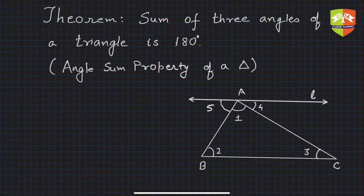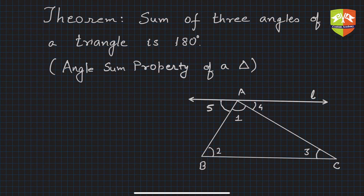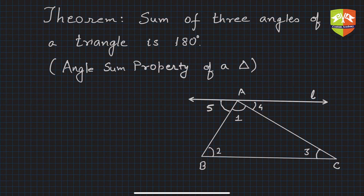In the previous part of the video we saw the validation of the theorem: the sum of three angles of a triangle is 180 degrees, also called the angle sum property of a triangle. We saw that in different configurations the sum was indeed 180 degrees. But a few examples cannot generalize or prove the theorem for all cases, so we must have a generalized proof. The theorem says: sum of three angles of a triangle is 180 degrees, and we have to prove it is true for any triangle. I've drawn a triangle ABC.